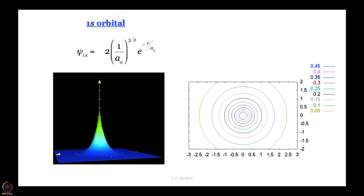The first picture is the 1s orbital. It is important to understand what has been drawn. The function is the simplest possible: some constant multiplied by an exponential decay in r — e^(−r/a₀). If you draw it in two dimensions you simply get an exponential decay.